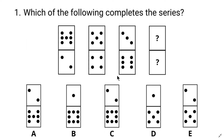Here's our first example: which of the following completes the series? There are five answers and you have to choose the correct one. There are black dots in each box. You can count and see how many dots there are — these are the questions you should ask yourself when solving these types of questions. In the first image, the top square has seven dots and the bottom square has two dots, so the total is nine.